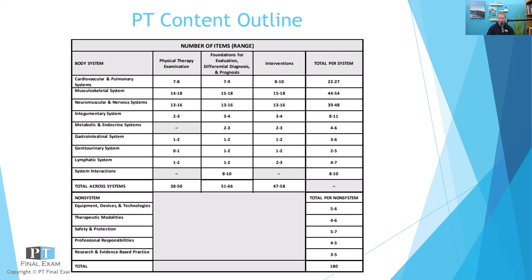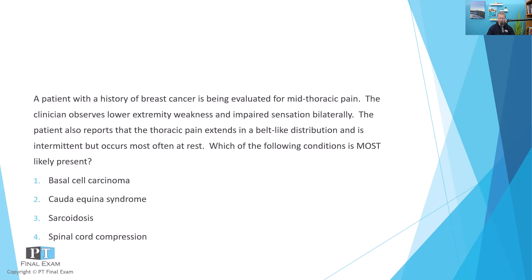This question is dedicated to the system interactions section on the exam. I'll read the question, we'll talk about it together and give you a moment to answer, and then we'll discuss the answer. A patient with a history of breast cancer is being evaluated for mid thoracic pain. The clinician observes lower extremity weakness and impaired sensation bilaterally. The patient also reports that the thoracic pain extends in a belt-like distribution and is intermittent, but occurs most often at rest. Which of the following conditions is most likely present? One: basal cell carcinoma. Two: cauda equina syndrome. Three: sarcoidosis. Or four: spinal cord compression.